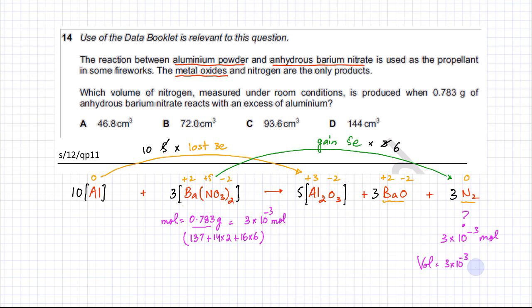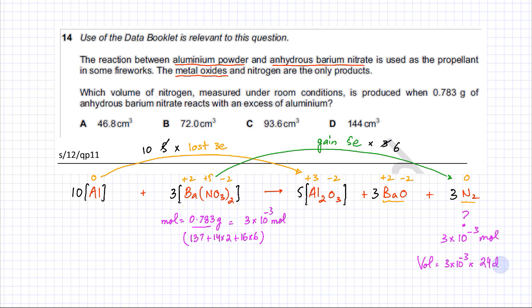Volume = 3 × 10⁻³ moles multiplied by 24 dm³ per mole (the molar volume). Solving this gives a volume of 0.072 dm³ of nitrogen gas.